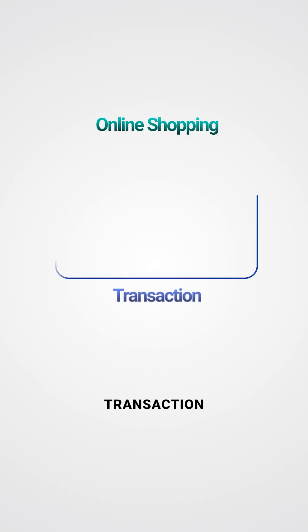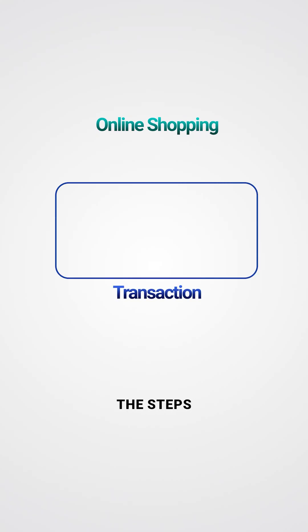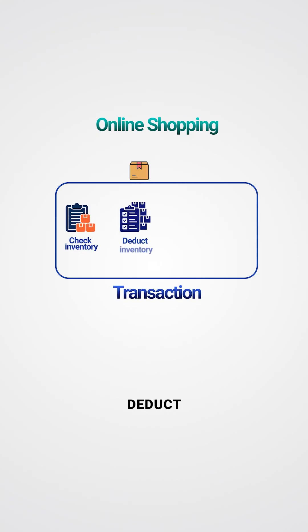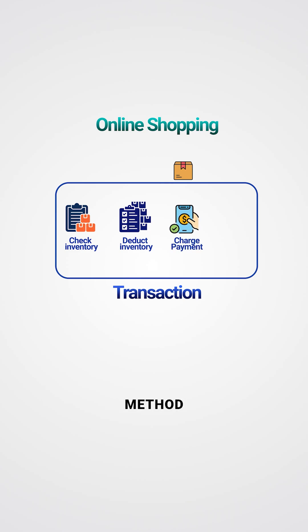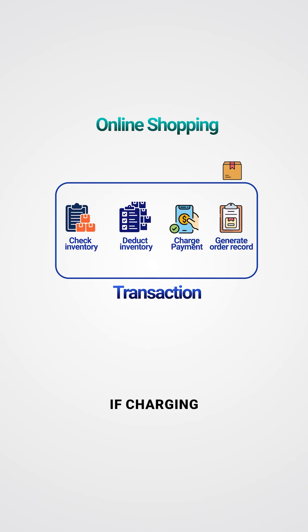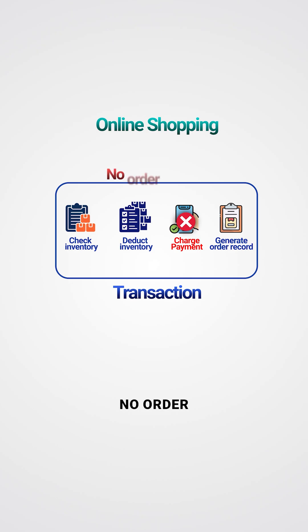In an online shopping flow example, your transaction might contain the steps to check the inventory, deduct the inventory, charge the payment method, and then generate an order record. If charging the card fails, the stock would get returned and no order would be created.